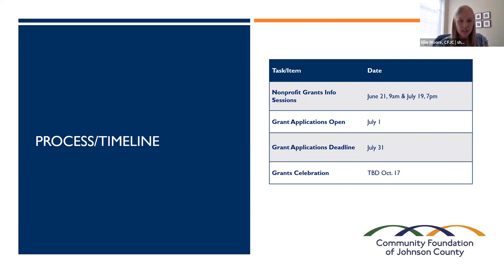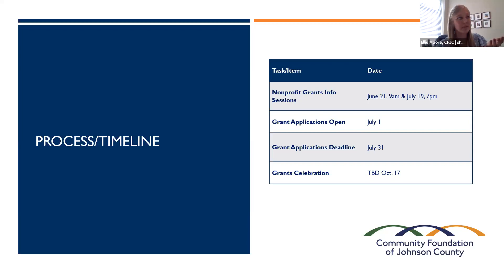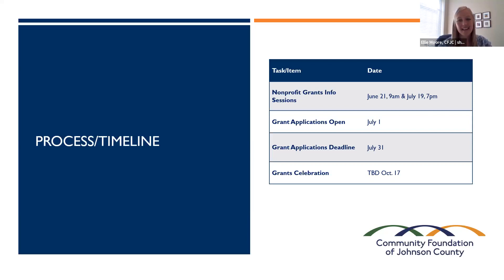Our process and timeline this year looks very similar to last year. We have today's info session, and we also have an info session in July during the application cycle — we've moved that one to 7pm to accommodate volunteers and grant writers who have full-time jobs. Applications will be open July 1 through July 31, giving you a full month. They are very short and hopefully not too challenging. Tentatively, our grant celebration and awards will be October 17th. That timeline is on our website and in our newsletter.